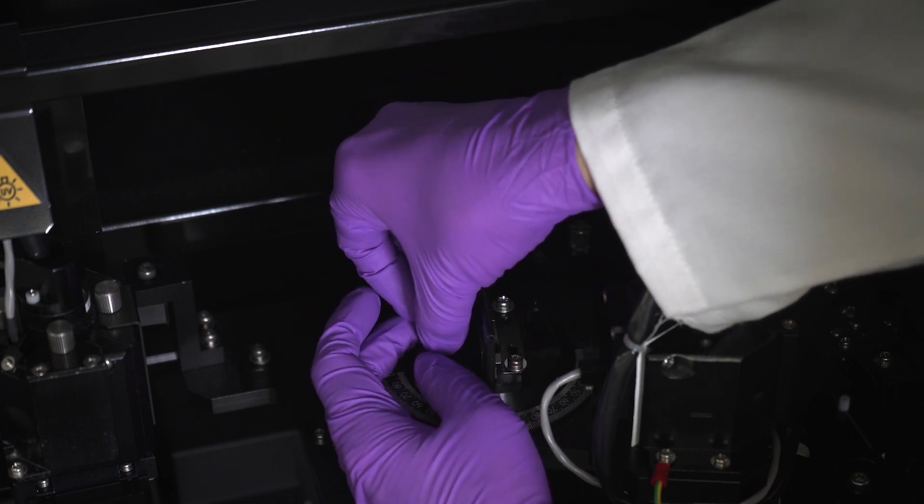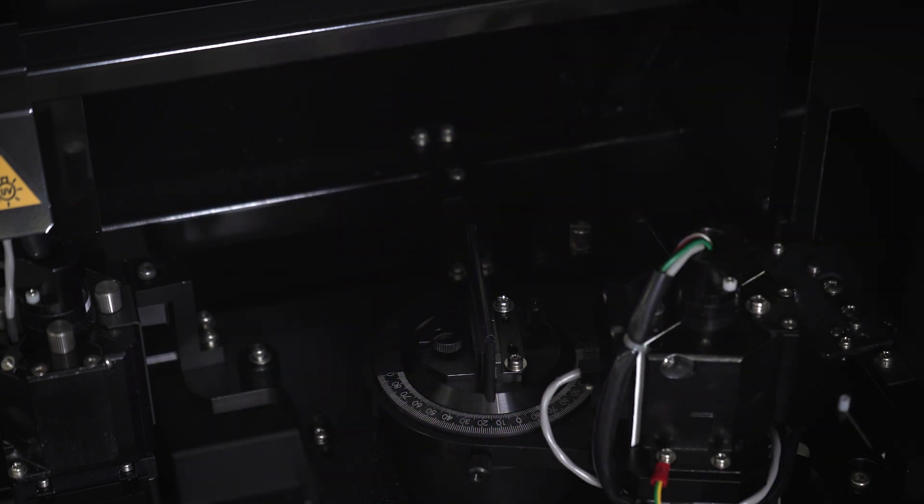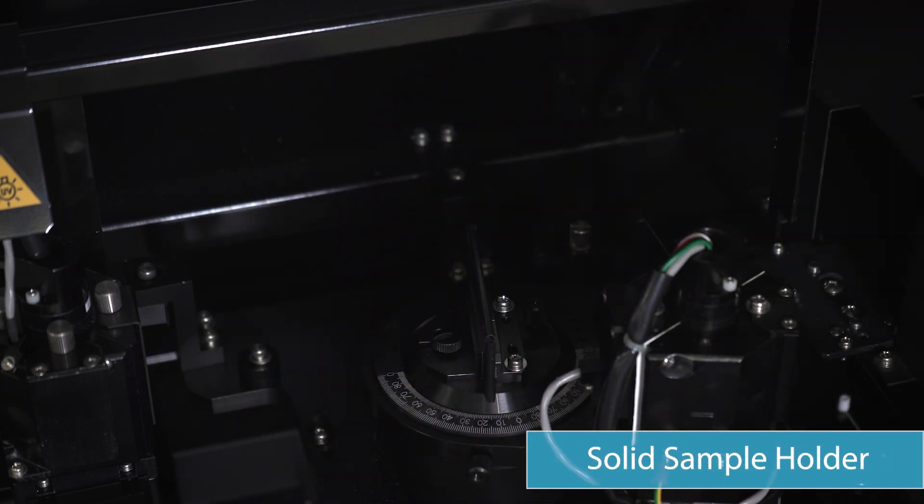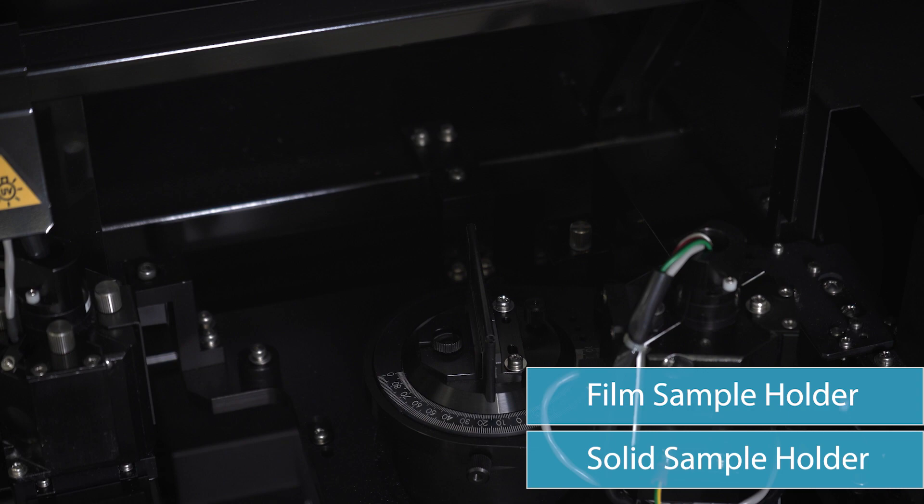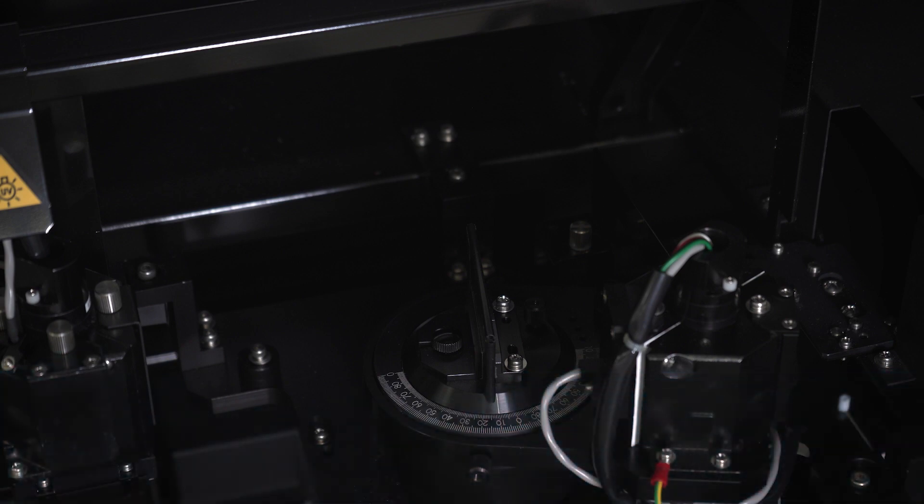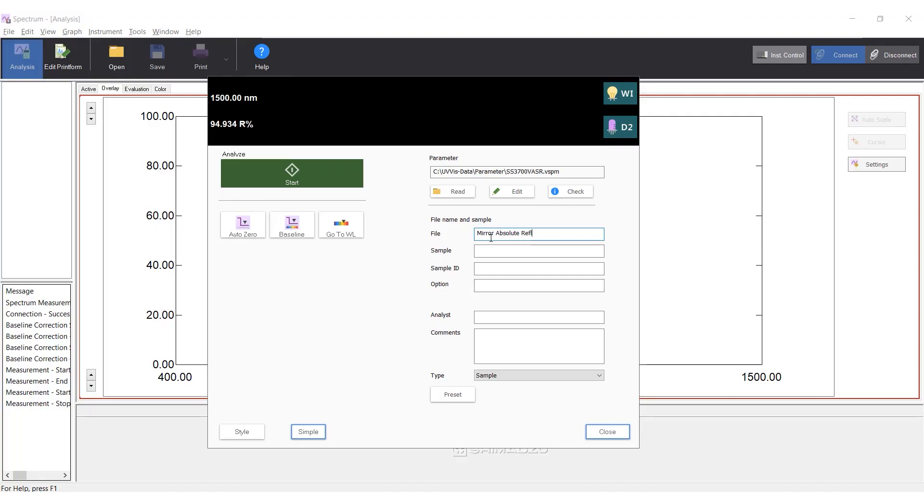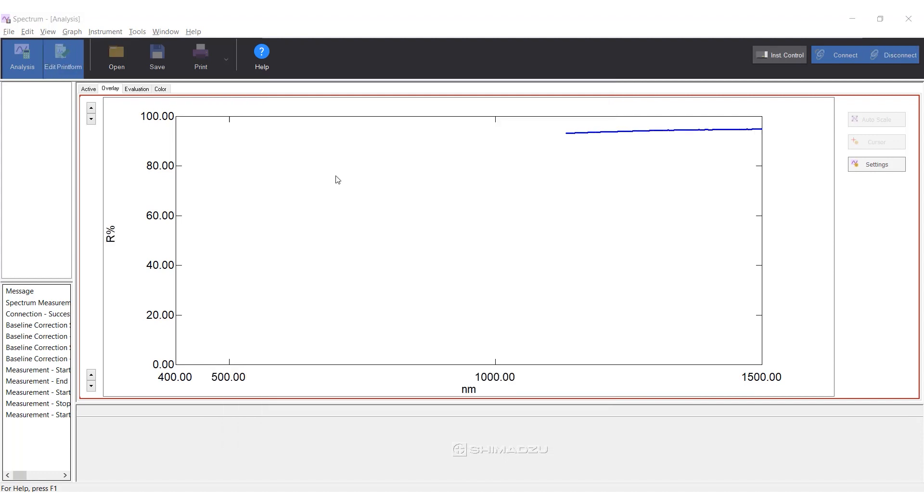Close the sample compartment. Note there are two types of sample holders: the solid sample holder and the film sample holder. Install the one appropriate for the sample. In LabSolutions UV-Vis software, click Start to start the absolute reflectance measurement.